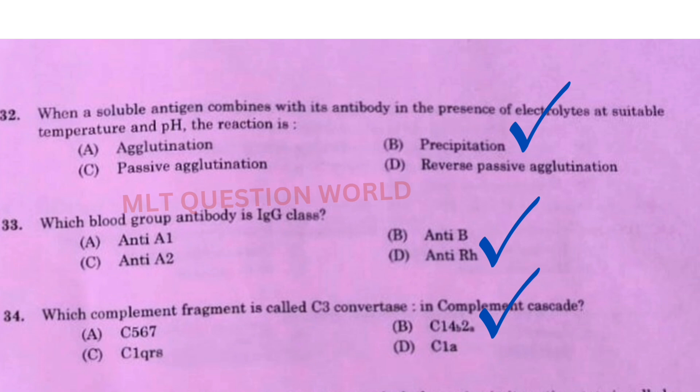Next one: When a soluble antigen combines with its antibody in the presence of electrolytes at suitable temperature and pH, the reaction is — the right answer is option B, precipitation. Next one: Which blood group antibody is IgG class? The right answer is option D, anti-Rh.